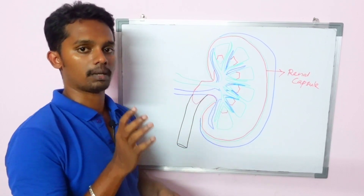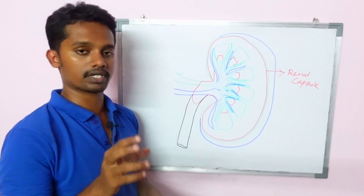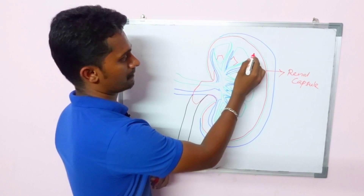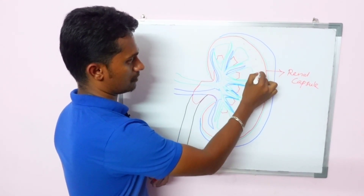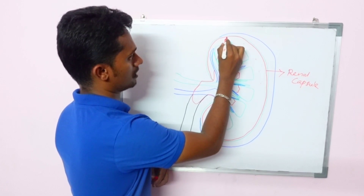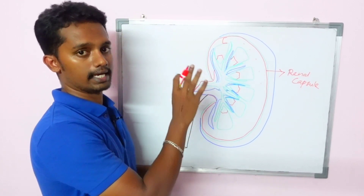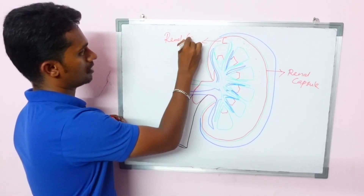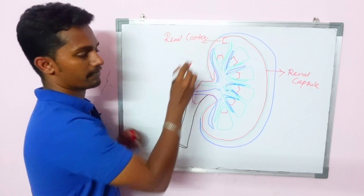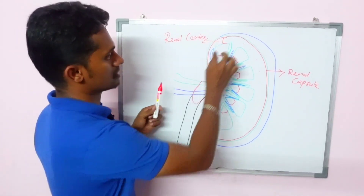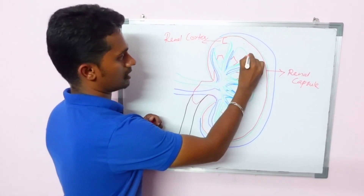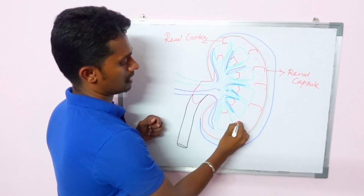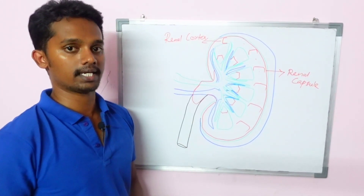Now, if we look at the kidney, there are two parts — the kidney has two regions. Here is a space, and here is another space. This outer region is called the Renal Cortex.